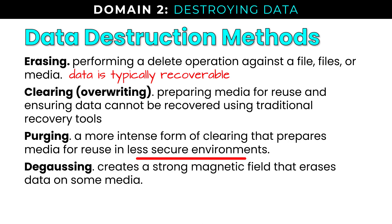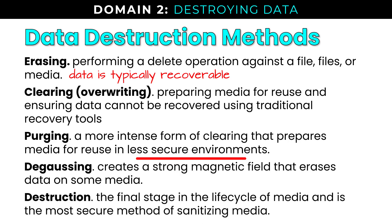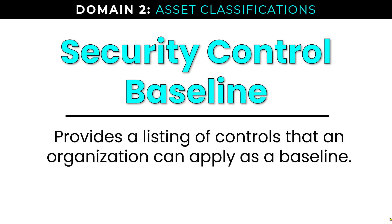Degaussing uses a device called a degausser to create a strong magnetic field that erases data on physical media. Destruction is the final stage in the life cycle of media and the most secure method of sanitizing data. Methods include incineration, crushing, shredding, and dissolving using a caustic or acidic compound. Before leaving data security controls, a security control baseline provides a group of controls that an organization applies as a base standard or starting point — not unlike a configuration baseline for securing endpoints.